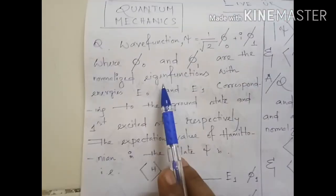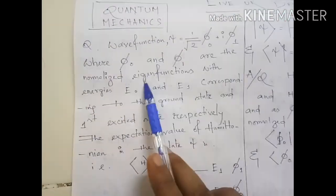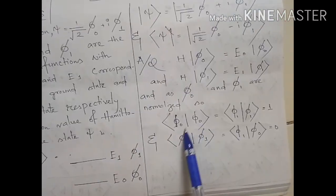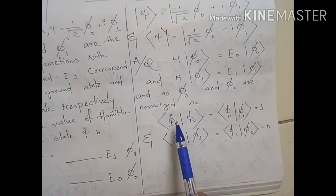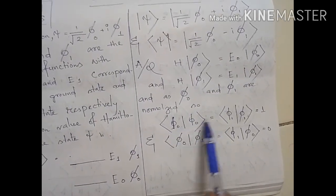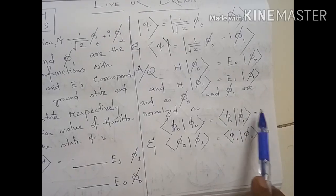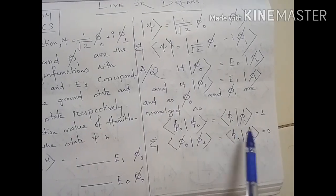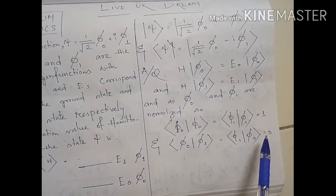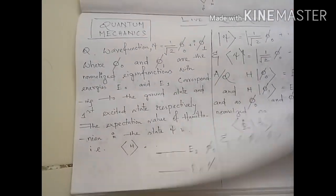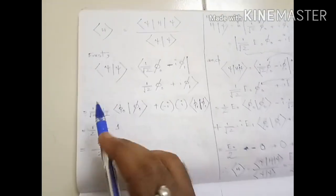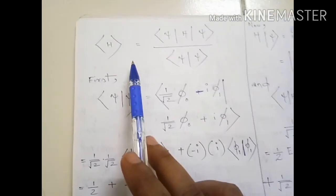It is mentioned that these are normalized eigenfunctions. Due to this, the inner product ⟨φ₀|φ₀⟩ = 1 and ⟨φ₁|φ₁⟩ = 1, but the cross terms ⟨φ₀|φ₁⟩ and ⟨φ₁|φ₀⟩ are zero.